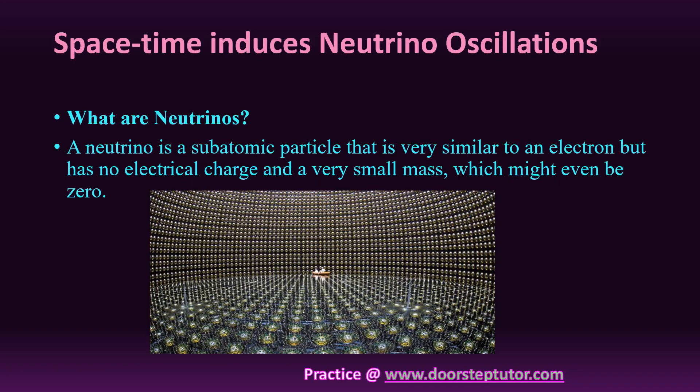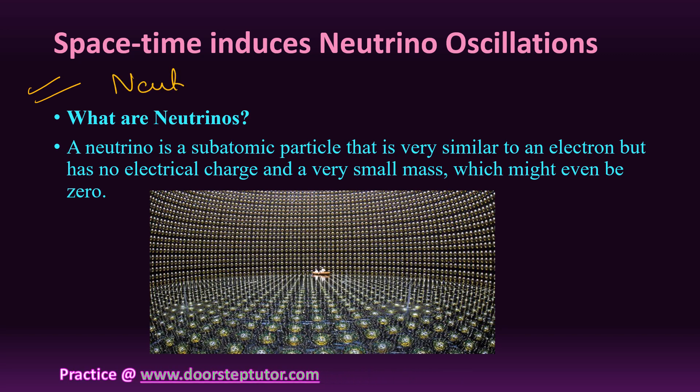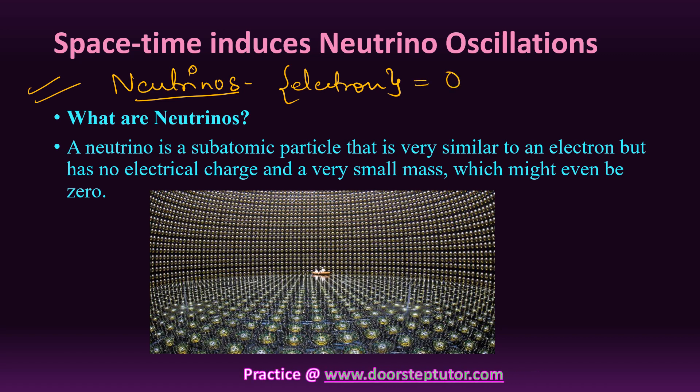Let's talk about neutrino oscillations. Space-time induces neutrino oscillations. Indian scientists recently have shown that the geometry of space and time can cause neutrinos to oscillate. A neutrino is a subatomic particle very similar to an electron but has no electrical charge and a very small mass which might be equivalent to zero.